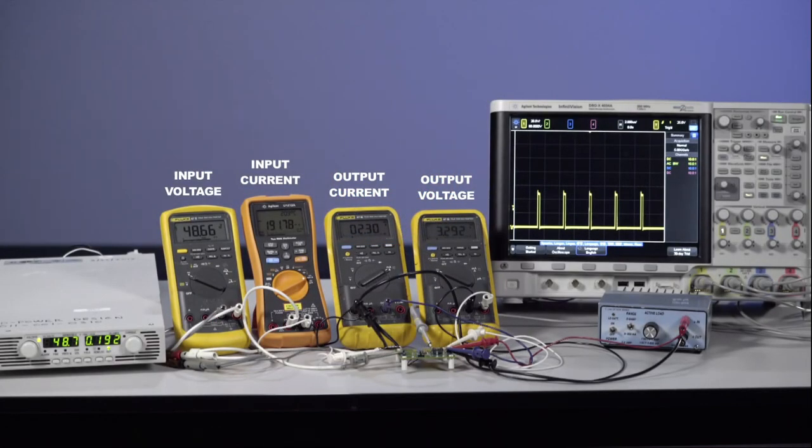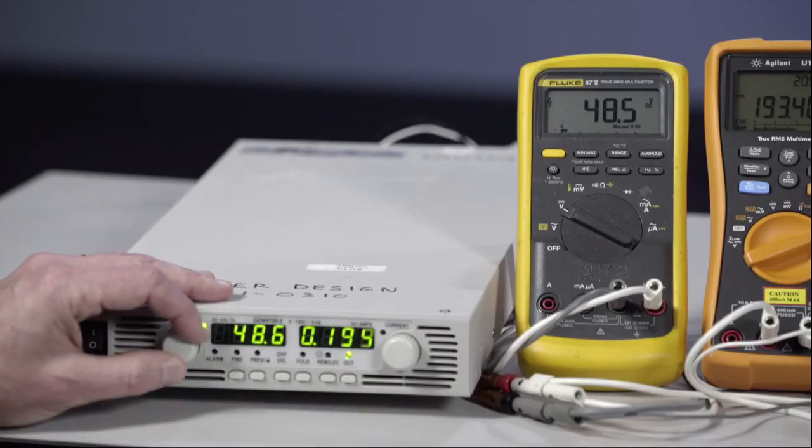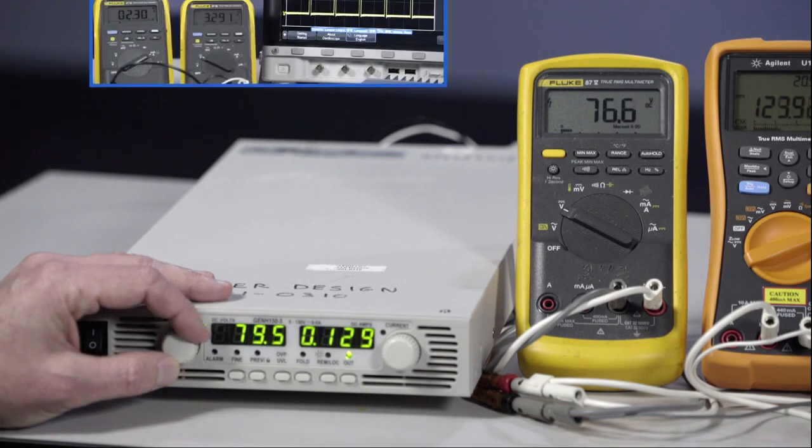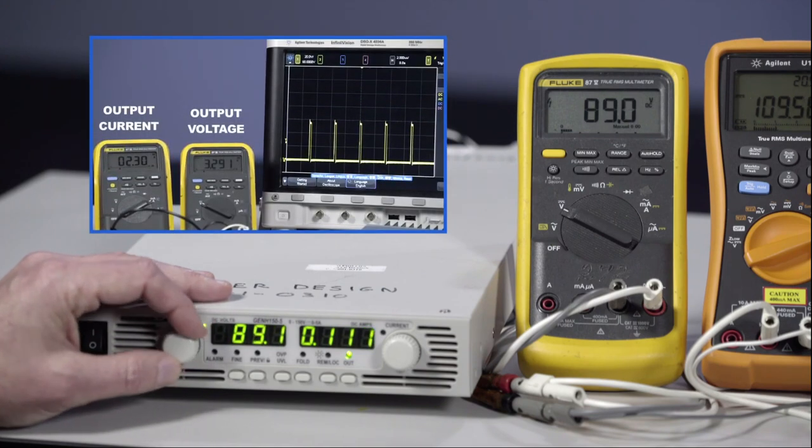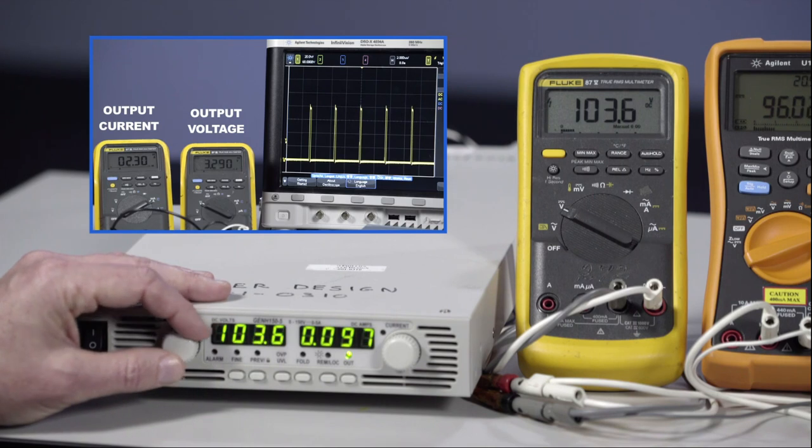Now let's take a look at the LTC7103 in operation. As the input voltage is increased from 48V to 105V, note that the switching is steady and the output voltage maintains regulation at 3.3V while delivering the maximum output current.